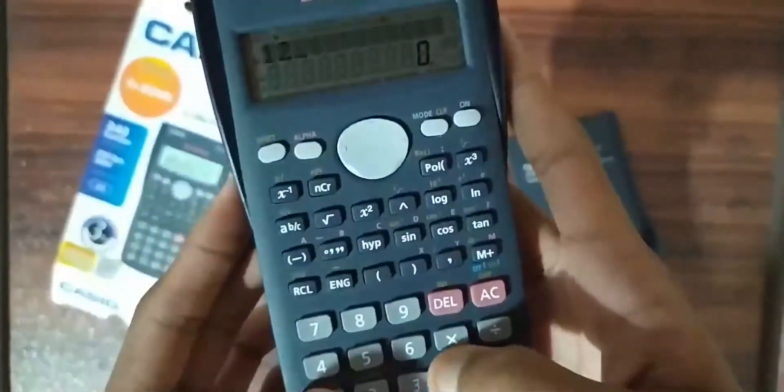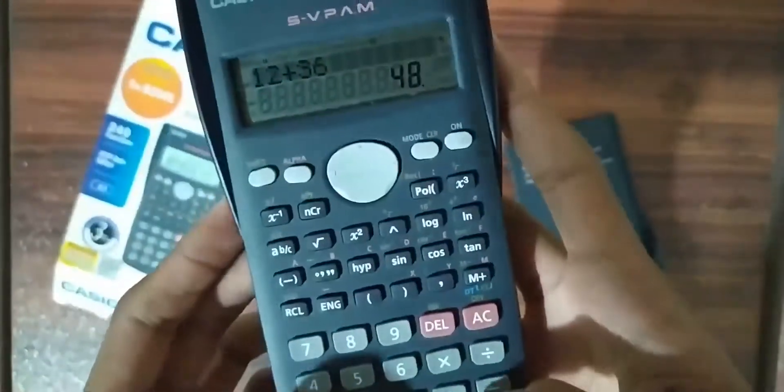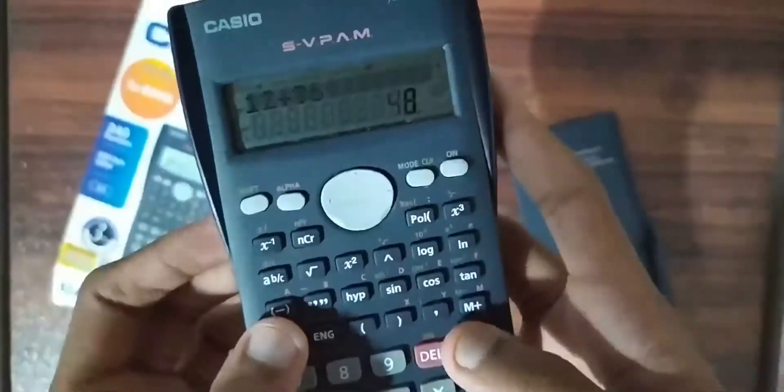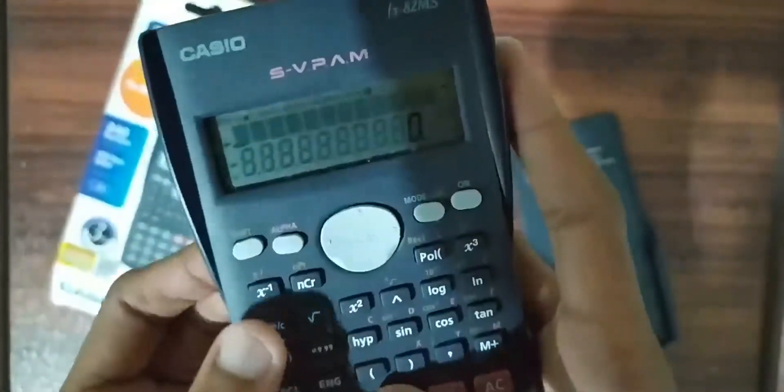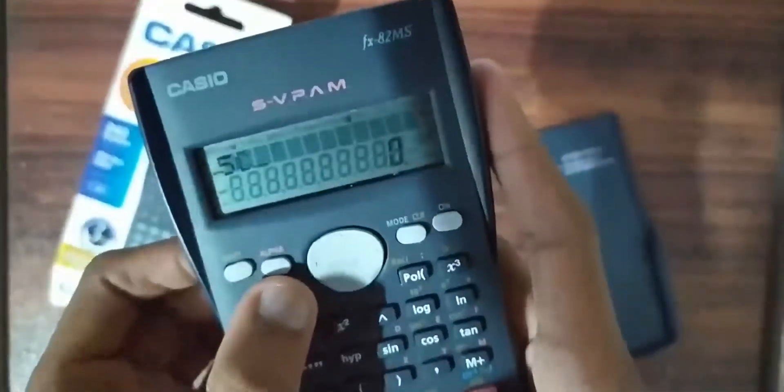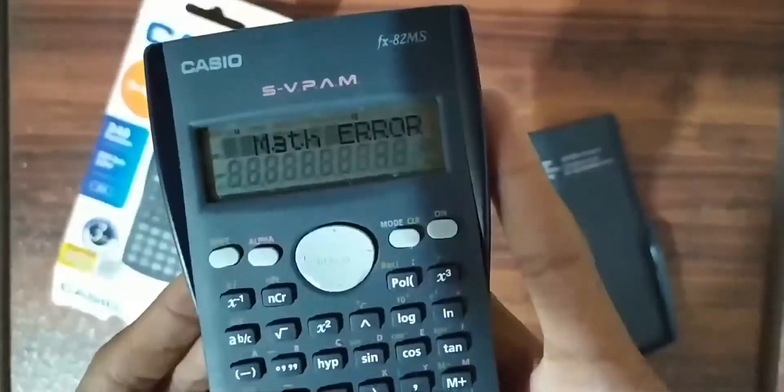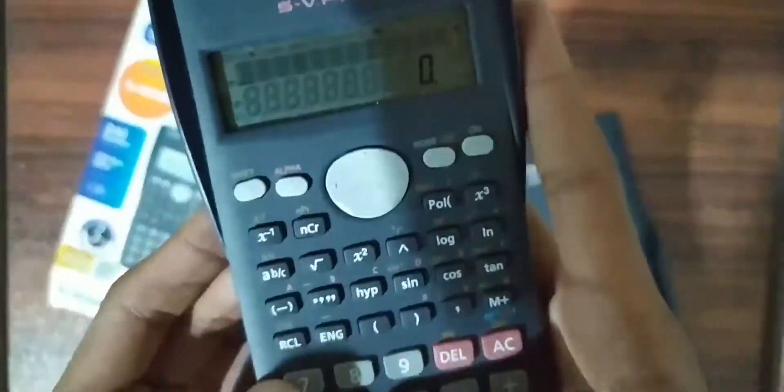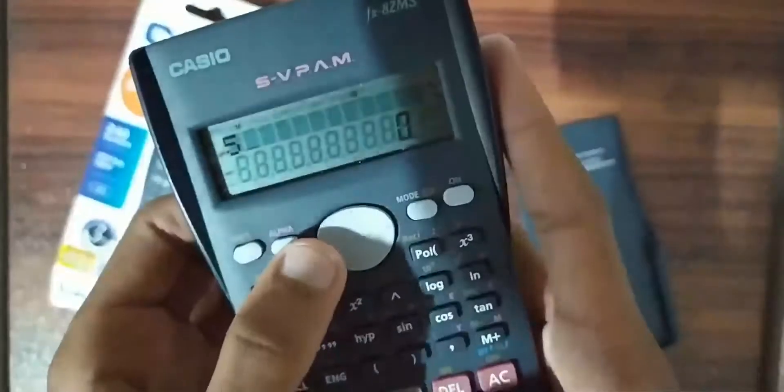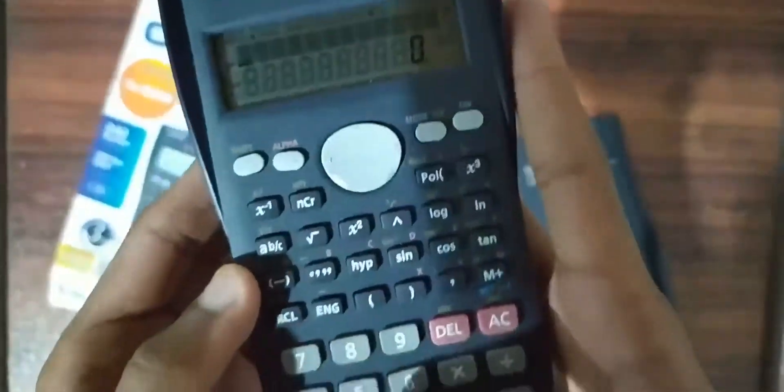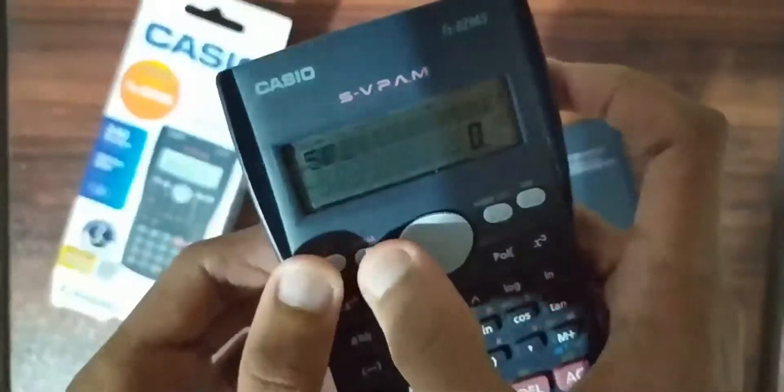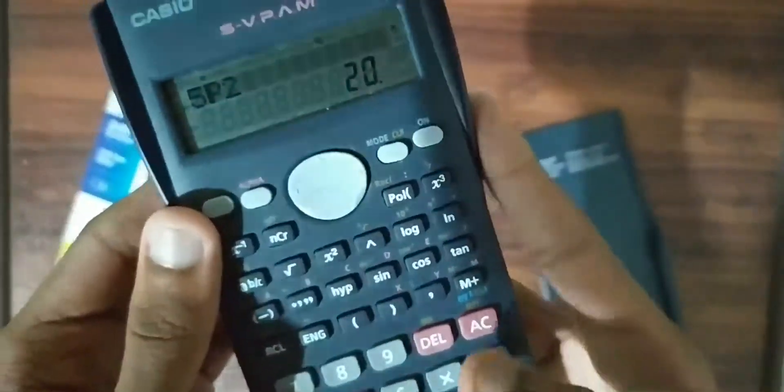Now let's check if the calculator can do some calculations. 12 plus 36 is 48. 5 divided by 6 is not possible, so it says Math Error. 4 times 5 is 20.